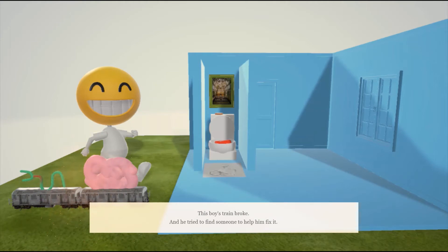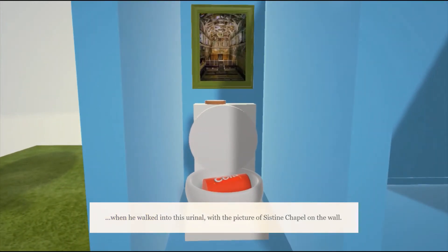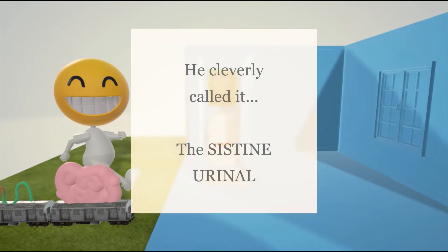This boy's train broke, and he tried to find someone to help him fix it when he walked into this urinal. With a picture of the Sistine Chapel on the wall, he cleverly called it the Sistine Urinal.